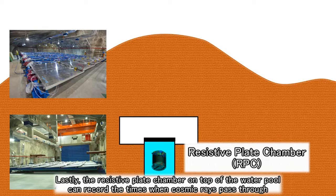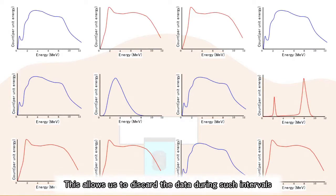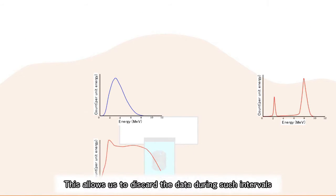Lastly, the resistive plate chamber on top of the water pool can record the times when cosmic rays pass through. This allows us to discard the data during such intervals.